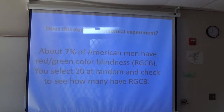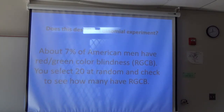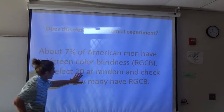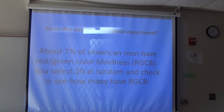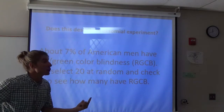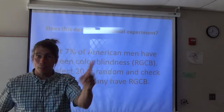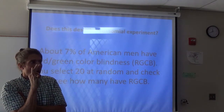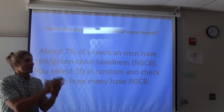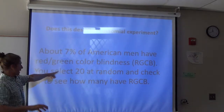About 7% of American men have red-green color blindness — my boss does, so it's very interesting. I'm going to select 20 American men at random and check to see how many of them have color blindness. Would that be binomial? Yes — you either do or you don't have it, that makes it binomial. And there's one other part: it's a fixed number of trials. I went out to get 20 of them — 20 in my sample. You have to fix that number to make it binomial.